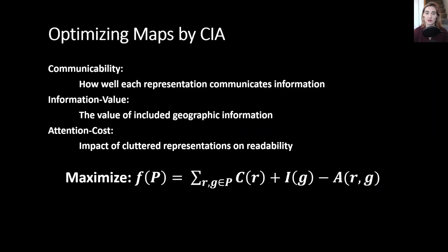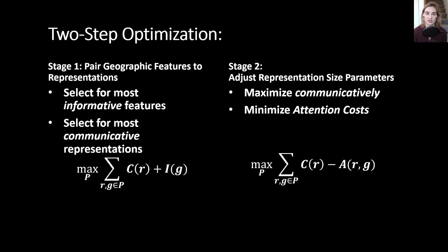We optimize our maps based off of three different components. Communicability, which measures how much each representation communicates information to each person. Information value, which is the value of the included geographic information on the map. And attention cost, which measures the impact of cluttered representations on the readability of the map overall. In order to maximize this objective function, we do an optimization process over two stages.